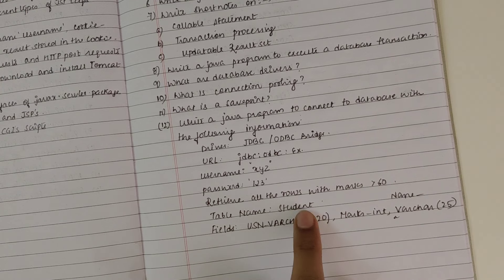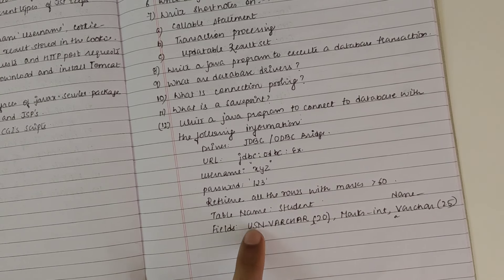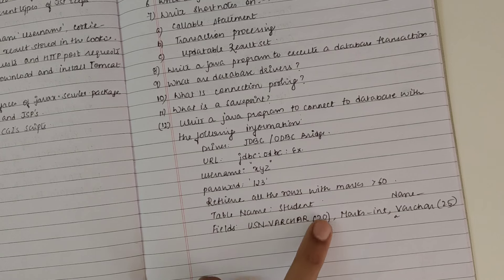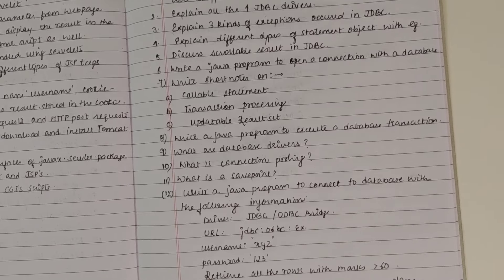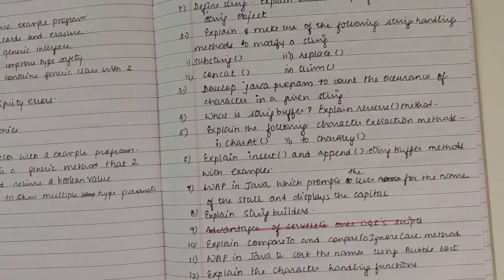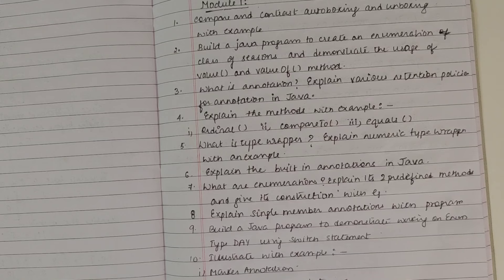Retrieve all the rows and rows with marks greater than 60. Table name is given: Student. Fields are given: USN should be varchar type 20, Mark should be integer value, at the same time Name should be varchar.